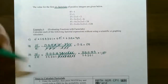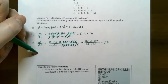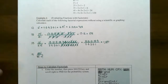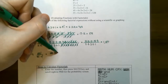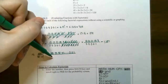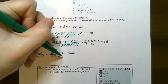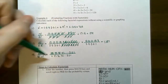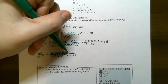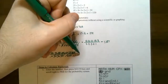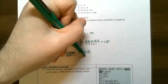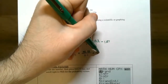Number 4: 100! / (98! · 2!). The numerator is 100 · 99 · 98 · ... · 1. The 98! in the denominator cancels everything from 98 down to 1. What remains in the numerator is 100 and 99, and the denominator is 2! = 2 × 1 = 2. So 100 · 99 / 2 = 4,950.